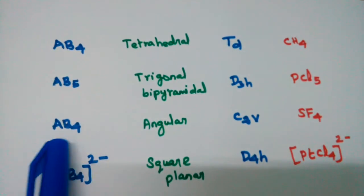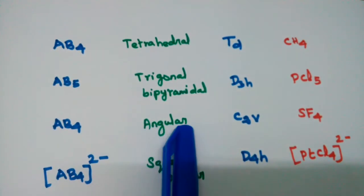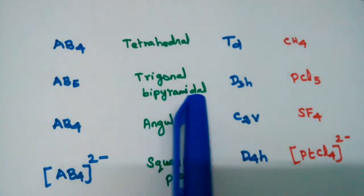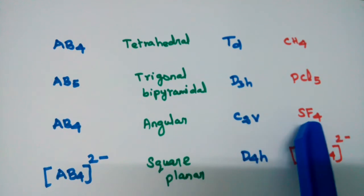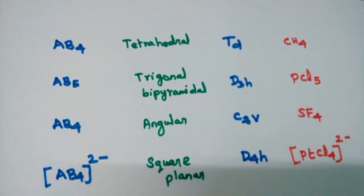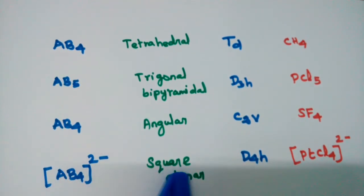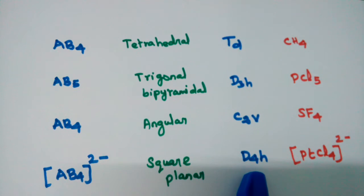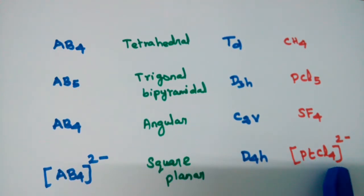Next, AB4 seesaw angular geometry, point group C2v, example SF4. Next, AB4 2- square planar structure, point group D4h, example platinum tetrafluoride 2-.